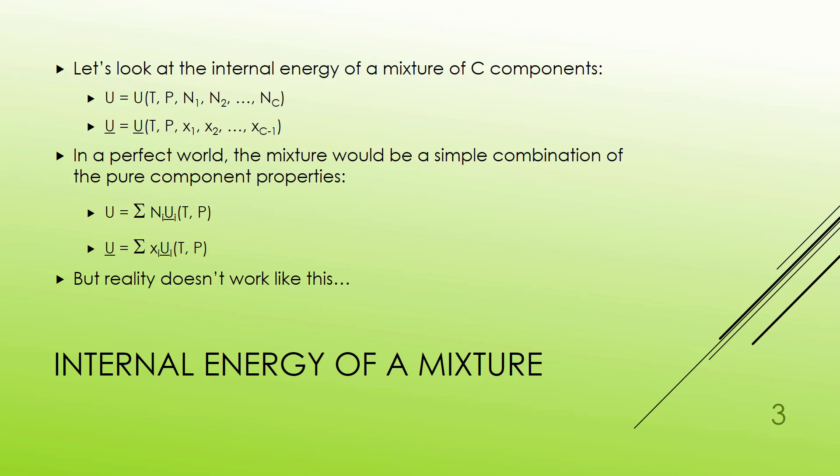Now if I just kind of naively thought about it, what I would probably say is I think that U would be just figure out how much specific U is for each of my components and then multiply by how much of each of those components I have. And if I added those up, that ought to be U, right? But sadly that isn't the case.